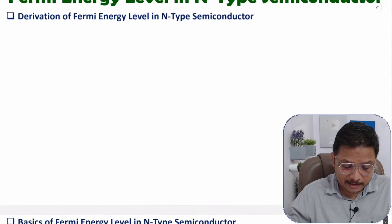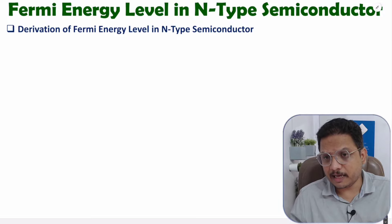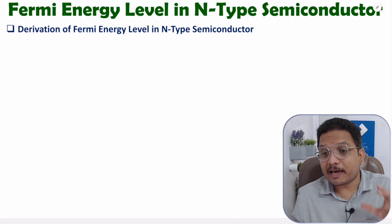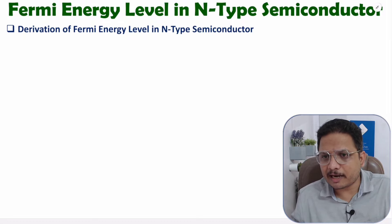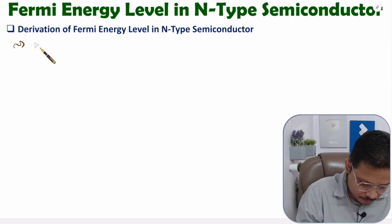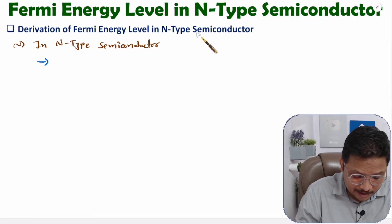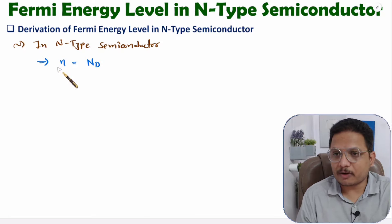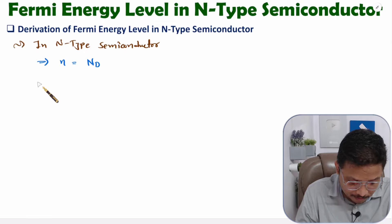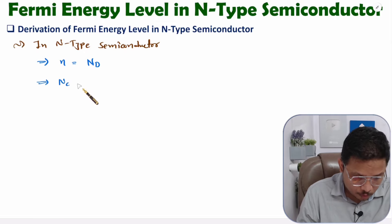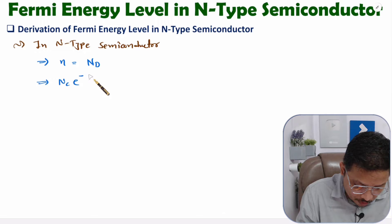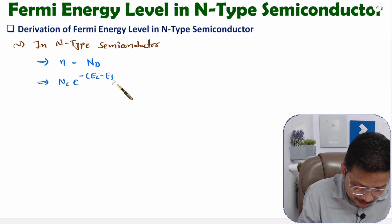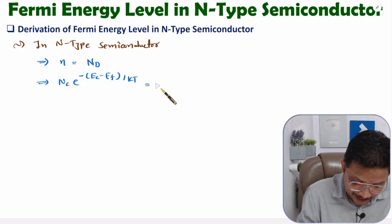Let us see first how things are with N-type semiconductor material. In N-type semiconductor material, we add pentavalent impurities, so here we are adding donor impurities. The concentration of electrons equals donor impurities, and the concentration of electrons that we have already derived is: Nc into e to the power minus of (Ec minus Ef) divided by KT, and this equals Nd.